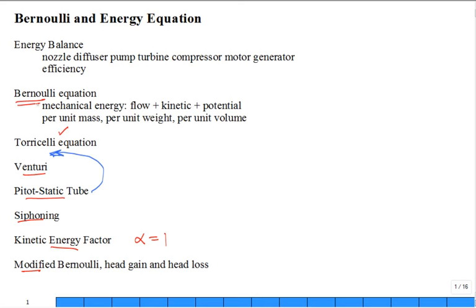Most of the time you just set alpha to 1 and there's really no correction factor. But sometimes you'll see alpha show up in Bernoulli's equation. If you want to get really precise, it would be something other than 1, depending on the velocity profile inside that duct or tube. Then we modify Bernoulli's — we have unmodified Bernoulli where energy is conserved, and modified Bernoulli where there are some losses through viscous dissipation. You can also add a pump to increase the head.